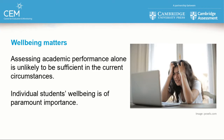Assessing academic performance alone is unlikely to be sufficient in the current circumstances, and individual students' well-being is of paramount importance. A decline in academic performance may be a sign that there are other, more deep-rooted problems causing the student anxiety. Students who have performed well in the past, but who now show a marked downturn in their attainment, could be struggling to cope, and it's likely that they've also experienced a weakening of their resilience.